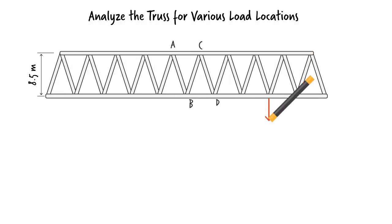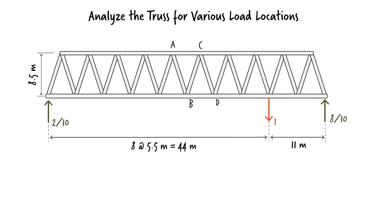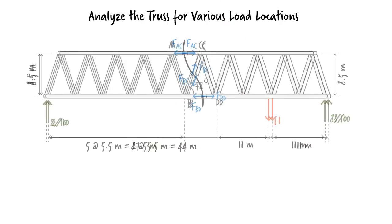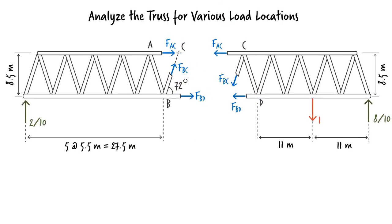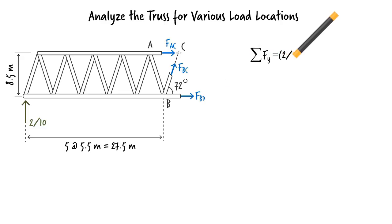Moving the unit load to the next joint, we get these support reactions. And if we cut through the three members again, we get this free body diagram. Using the same scheme as the previous step, we can determine the three unknown forces.